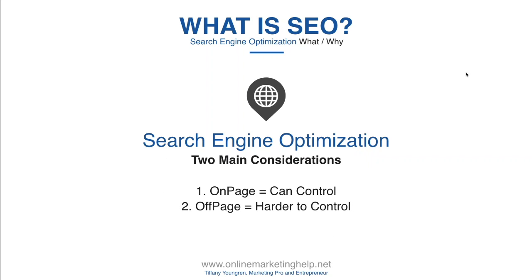There are two main considerations in search engine optimization: on-page SEO and off-page SEO. On-page SEO you can control — things like your page title, how many times your keyword phrases appear in the body text, whether you're using them too much or not enough, and how many synonyms to your keyword phrases are being used. All of those things we can go in and control directly.